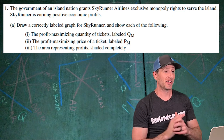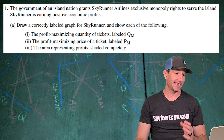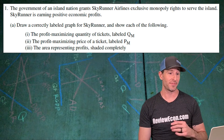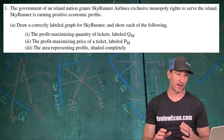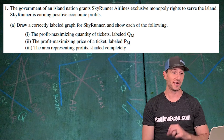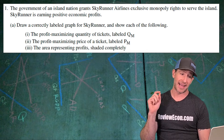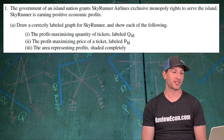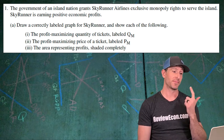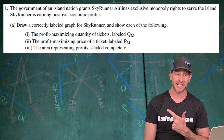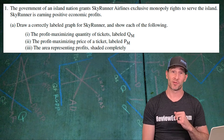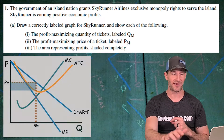Question number one: the government of an island nation grants Skyrunner Airlines exclusive monopoly rights to serve the island. Skyrunner is earning a positive economic profit. First thing we have to do is draw a properly labeled graph and show the profit-maximizing quantity of tickets labeled QM, the profit-maximizing price labeled PM, and the area representing profits, shaded completely. Here's my answer for that one.